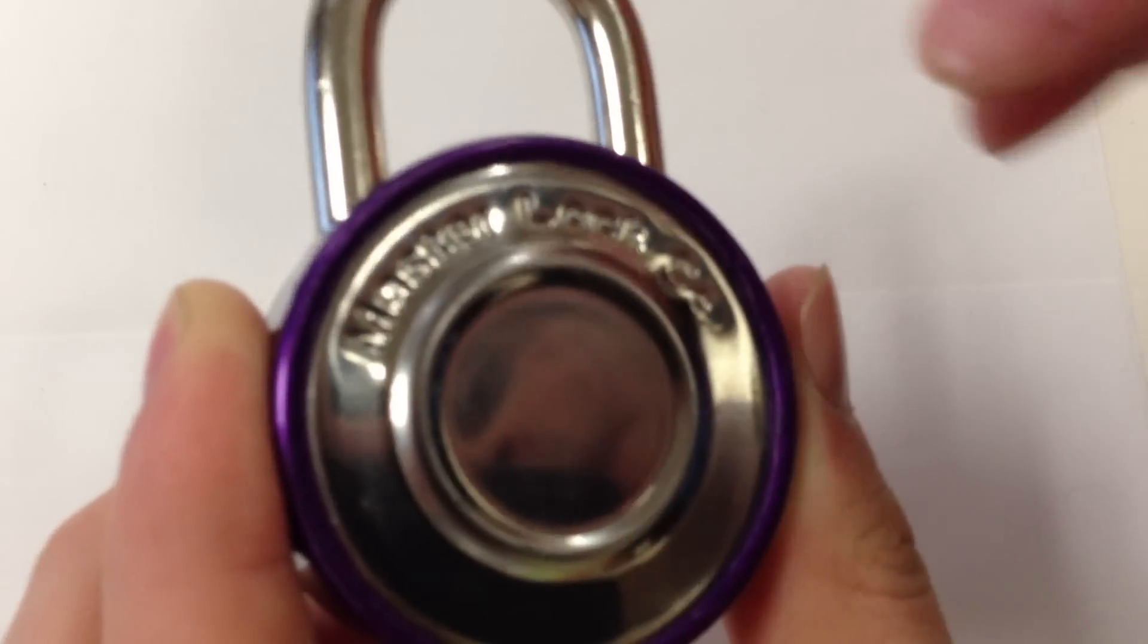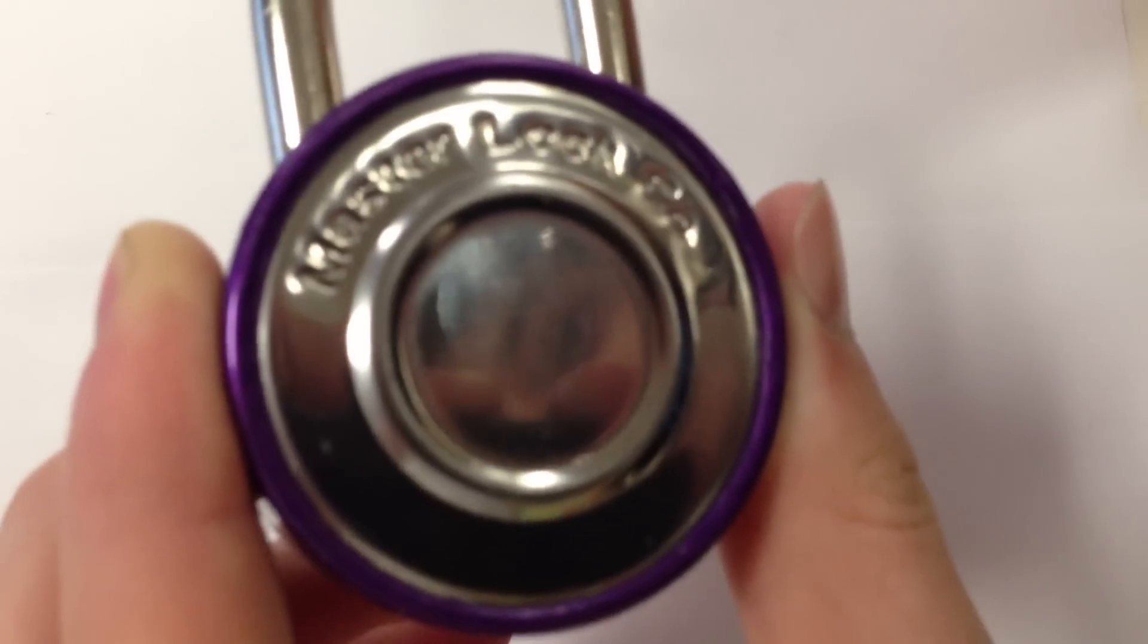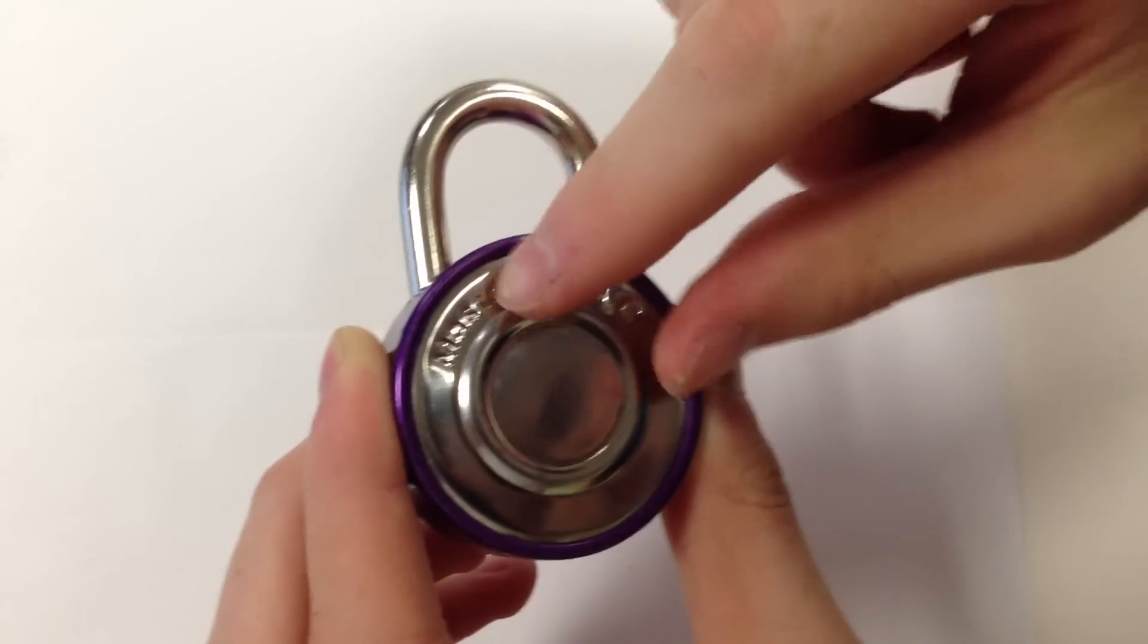Once we made all the slices all the way around, we were able to peel back the metal, which just allowed the back cover to come right off.